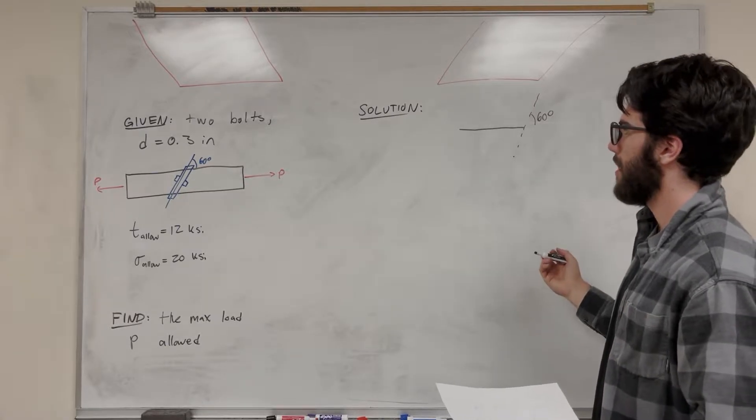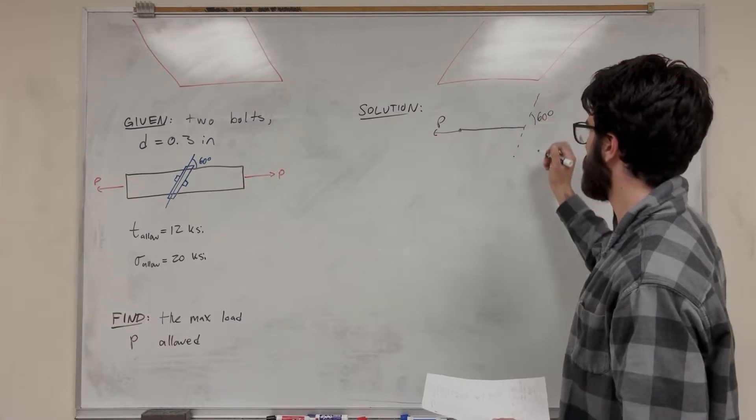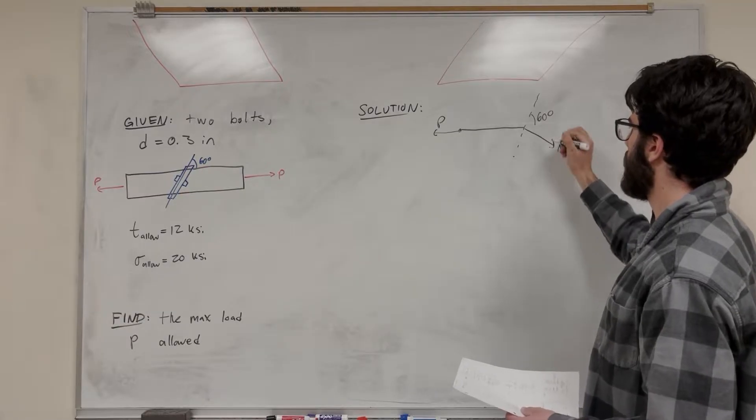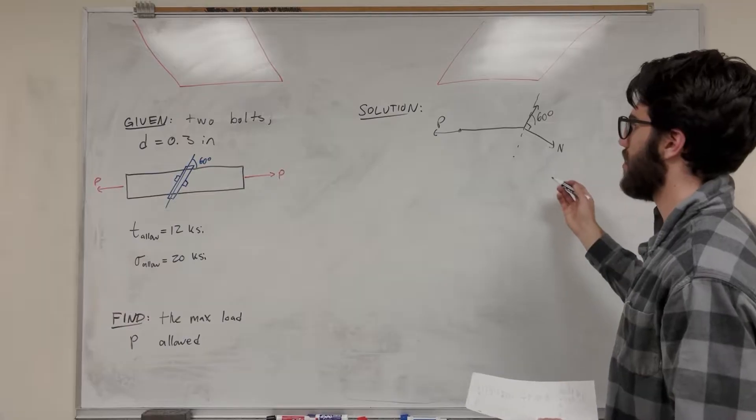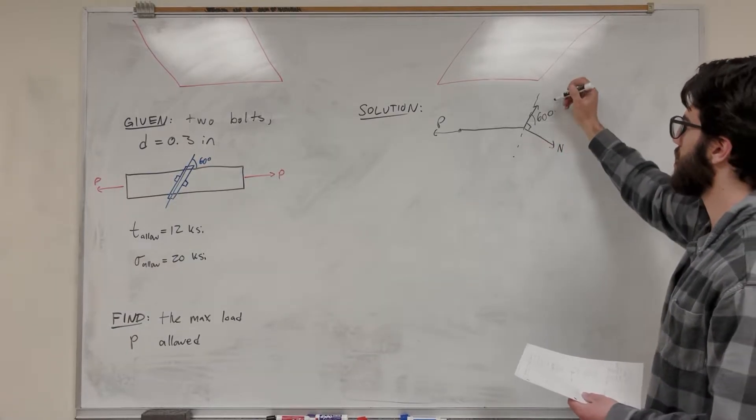Taking a cut like that and we have P here pushing or pulling. So our normal is going to be pushing this way and our shear is going to be perpendicular. So these are going to form a right angle and normal is perpendicular to the cut, shear is parallel to the cut.